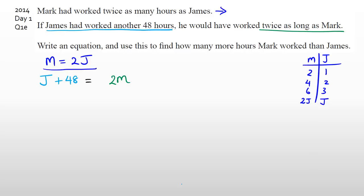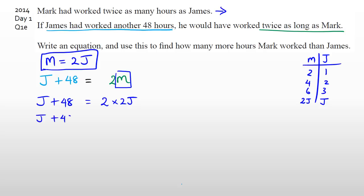We have m equals 2j, which means I can get rid of m here. So I can rewrite the equation as j plus 48 on the left-hand side equals 2, and because m equals 2j, I can replace that m with 2j. Now it's just a matter of expanding and simplifying — j plus 48 equals 2 times 2j, which is 4j. I need to rearrange so j is by itself, so I subtract j from both sides, giving 48 equals 3j.